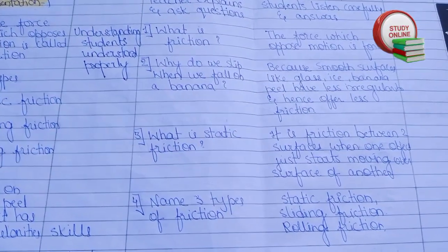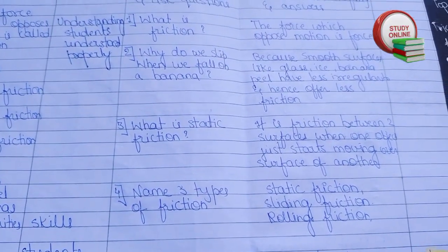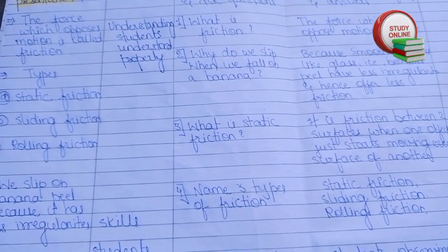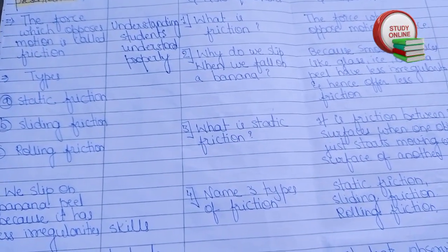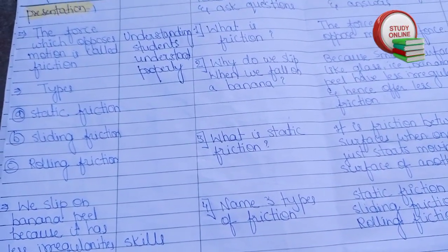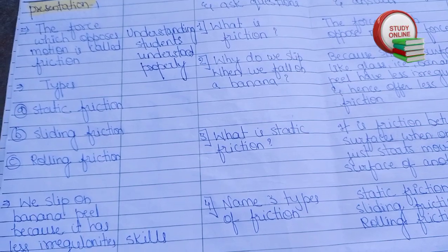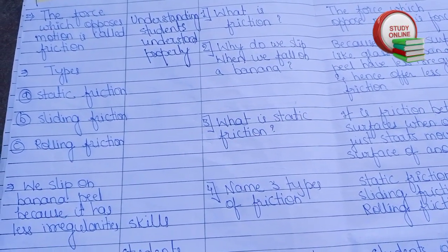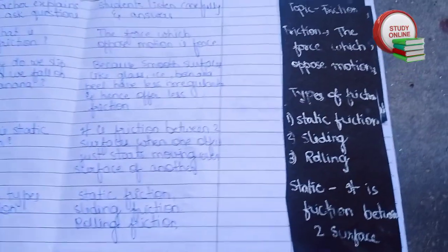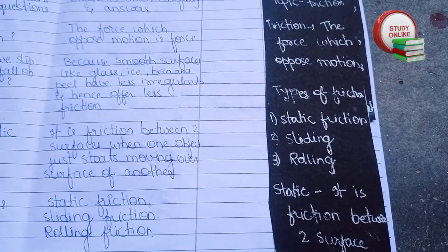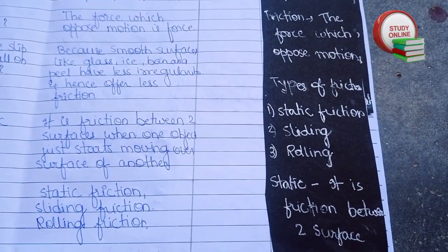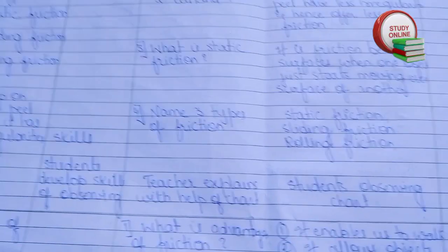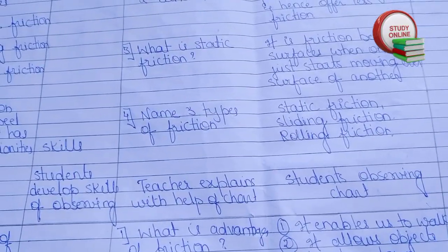The questions include: what is friction, why do we slip when we step on a banana, what is static friction, and name three types of friction. Here are the answers we expect from students. You can also see the blackboard work, and the teacher explains with the help of a chart.